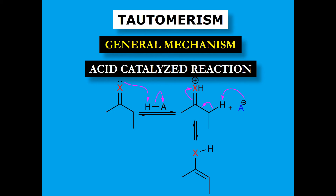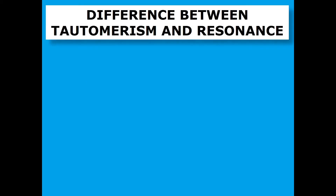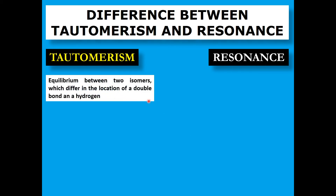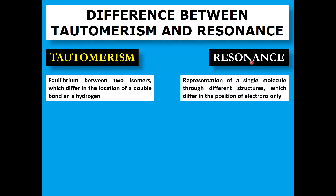We have discussed resonance earlier, and it's important to understand the main difference between tautomerism and resonance. The basic difference is that tautomerism is an equilibrium between two isomers — two different molecules that differ only in the location of a double bond and a hydrogen atom. Resonance, on the other hand, is just a representation of a single molecule by more than one structure, where those structures differ only in the position of electrons.